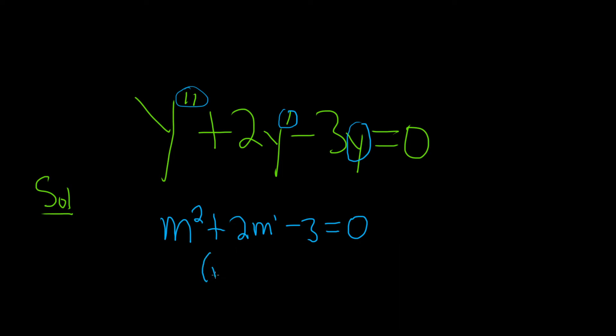I believe this factors. Let's try it. So we have parentheses m, parentheses m equal to zero. So we need two numbers that multiply to three. So three and one, and one of them has to be negative.